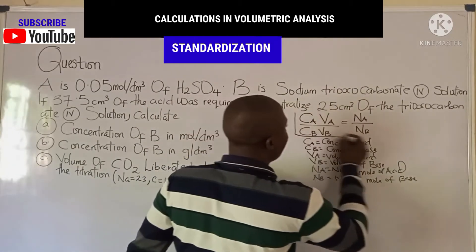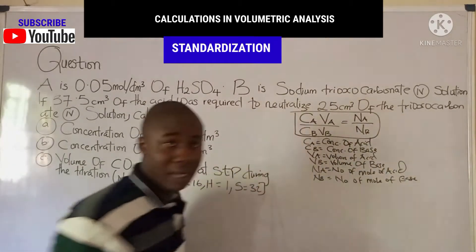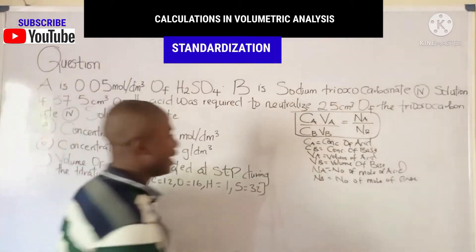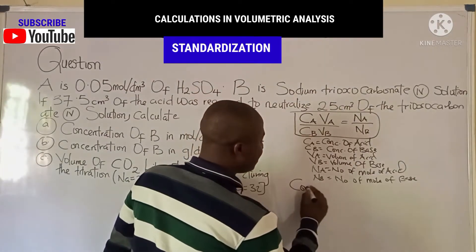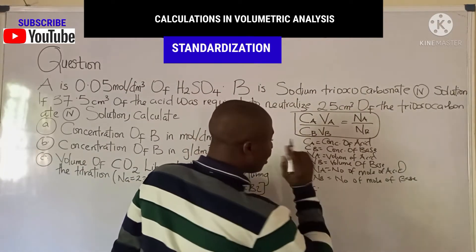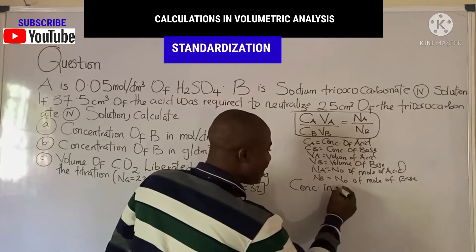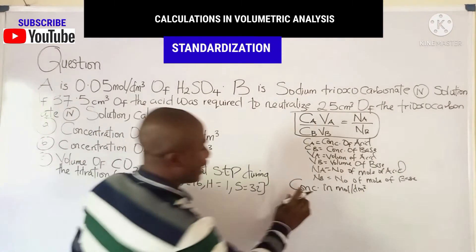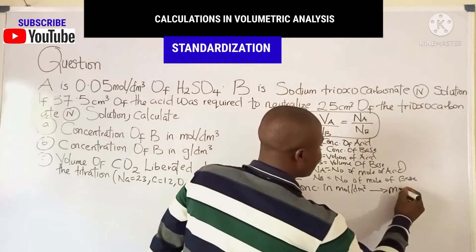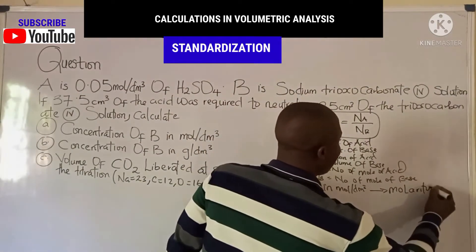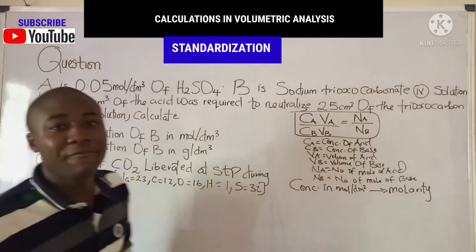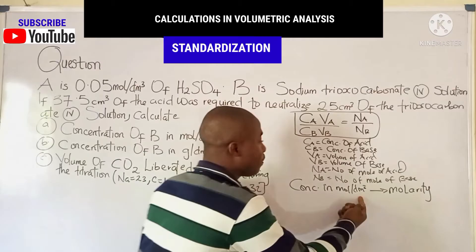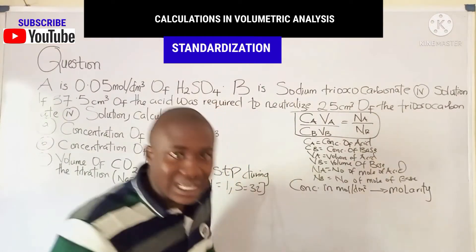Another important equation is the calculation of concentration. Concentration in moles per dm³ is the same as molarity. We have various concentration units — concentration in moles per dm³ is called molarity.